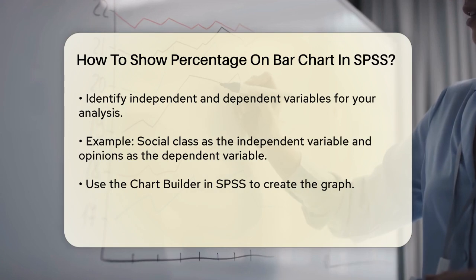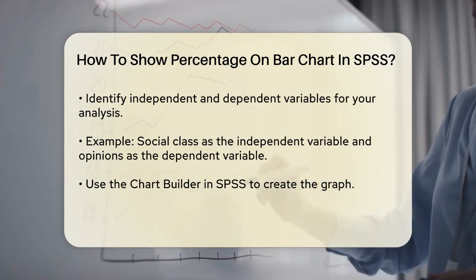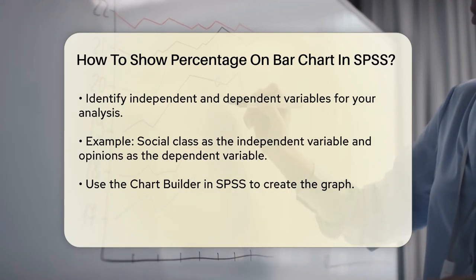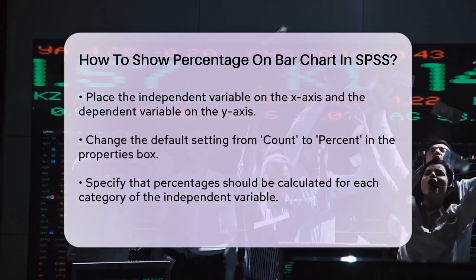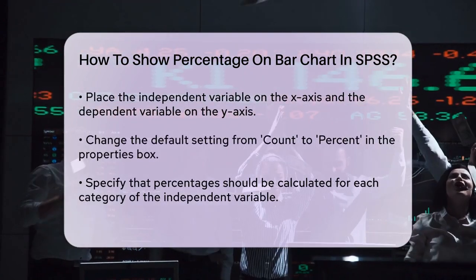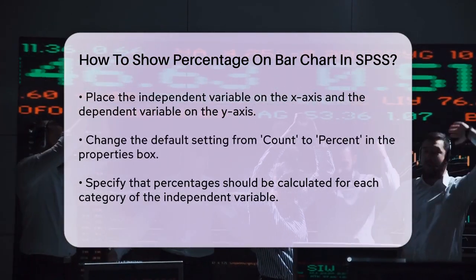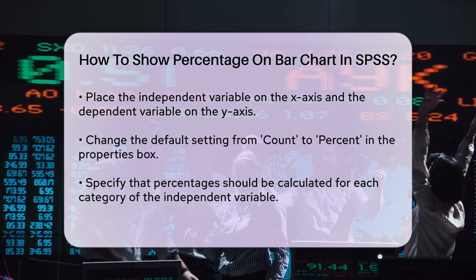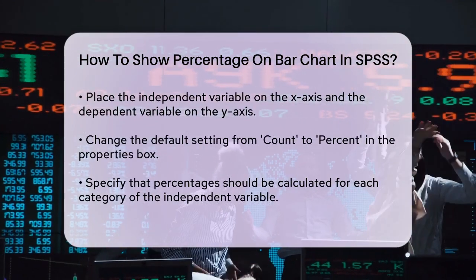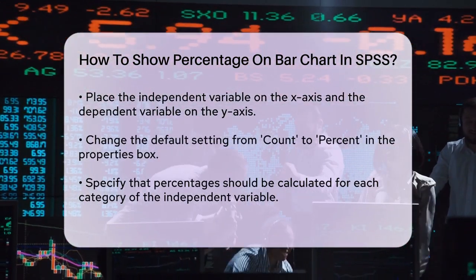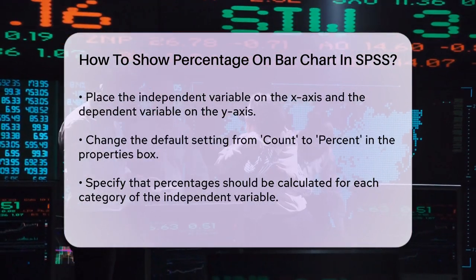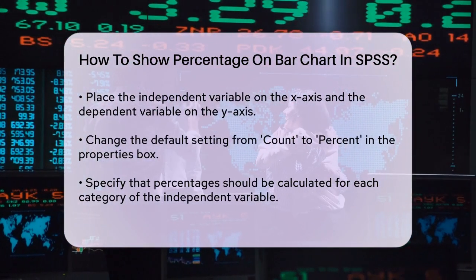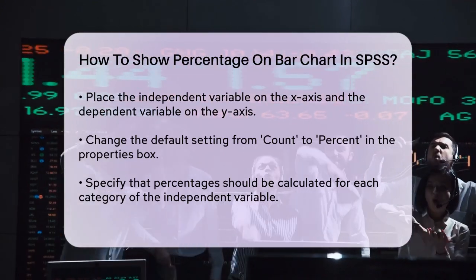For a stacked bar graph, the process is similar, but with a few tweaks. You still place your independent variable on the x-axis and your dependent variable on the stacked section. However, you need to ensure that the percentages are calculated for each x-axis category. This means that each bar in your stacked graph will add up to 100%, showing the distribution of your dependent variable within each category of your independent variable.